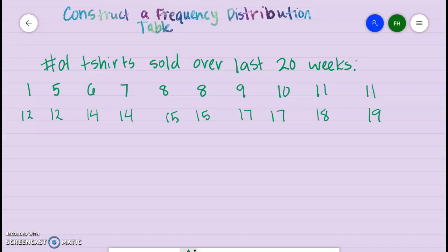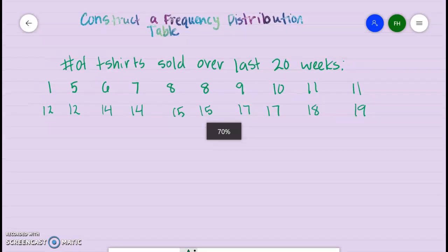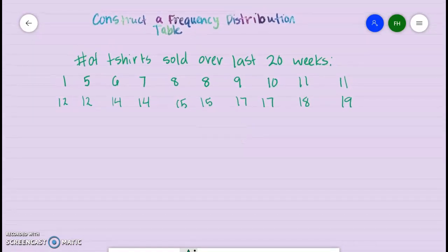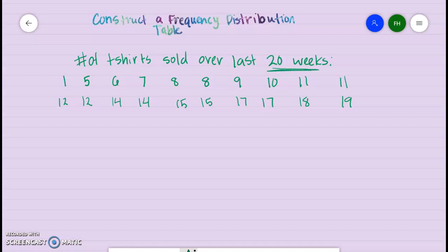Before we can make our table, we're going to apply the 2^K rule because we have a range of numbers here. We're looking at the number of t-shirts sold over the last 20 weeks. So 20 is going to be our sample size.